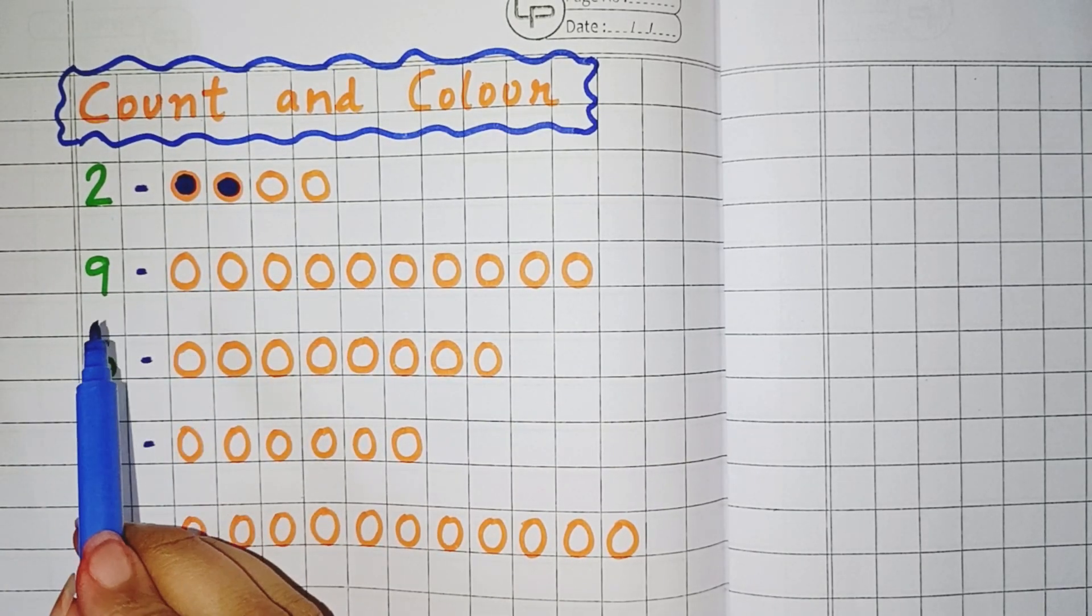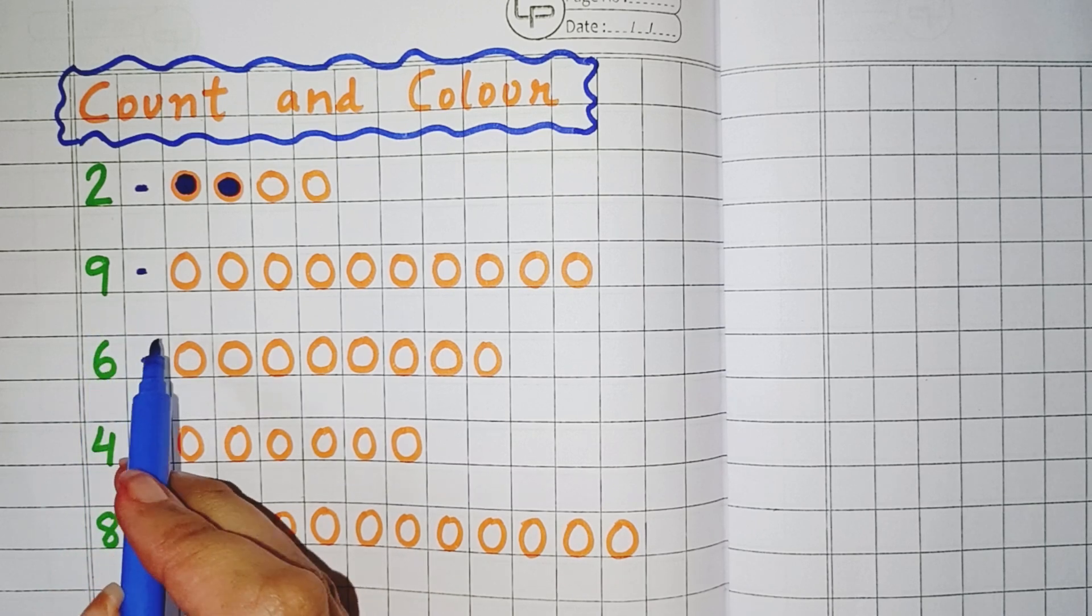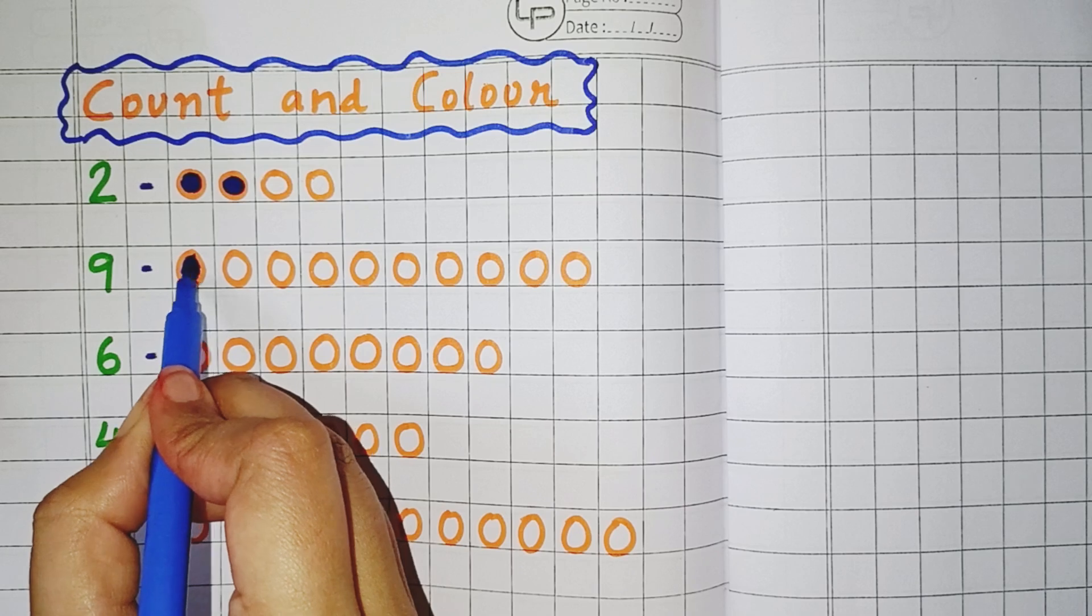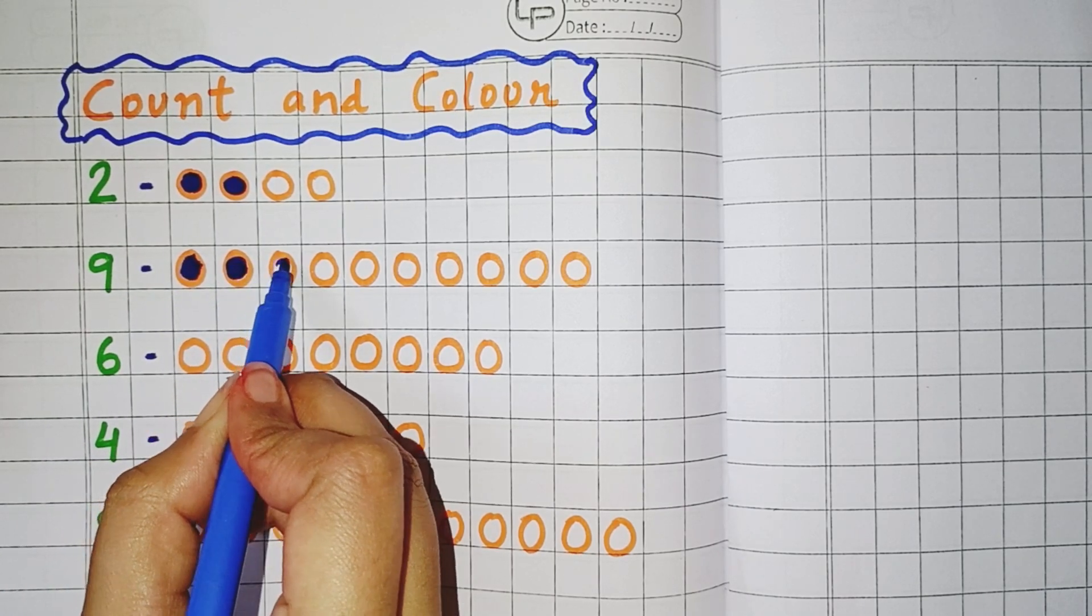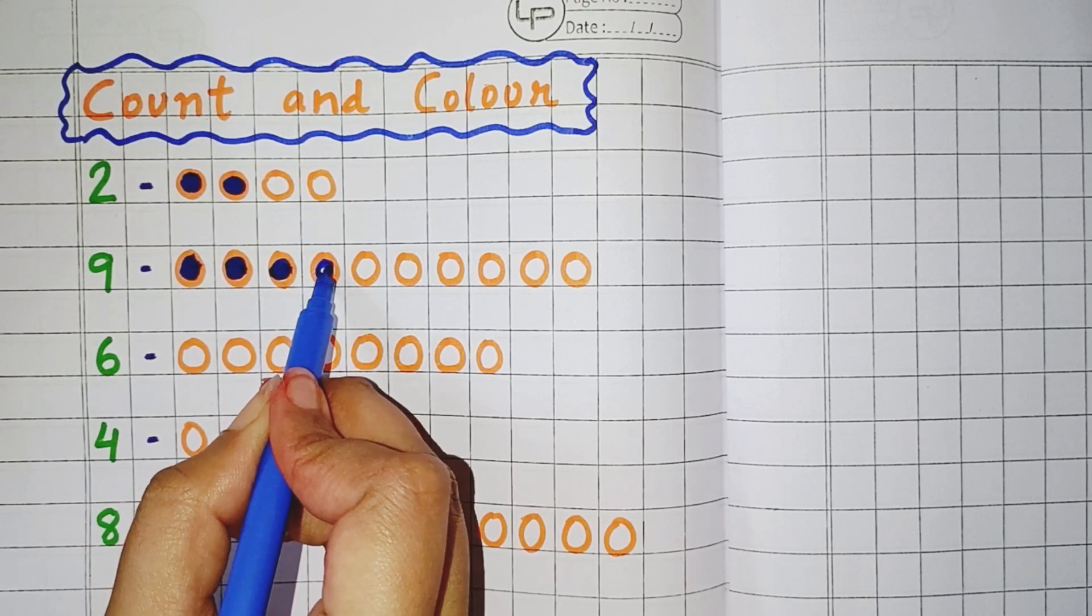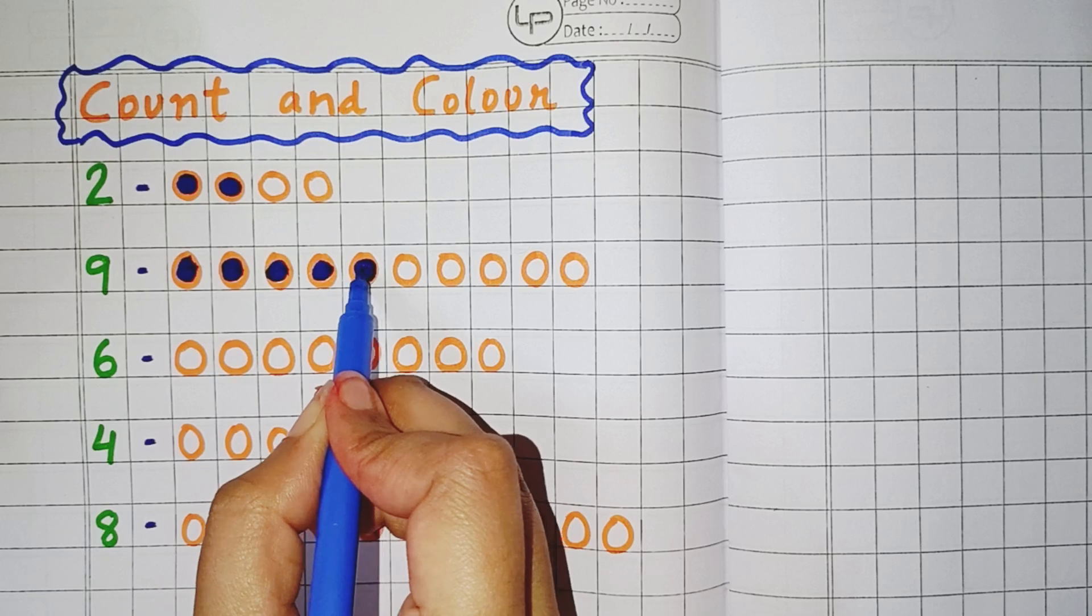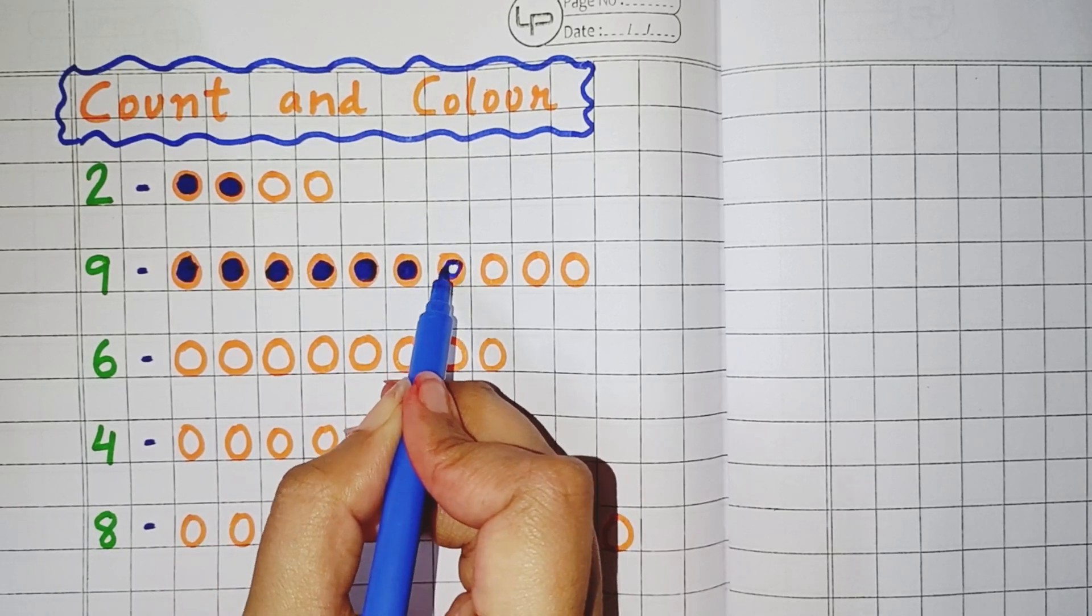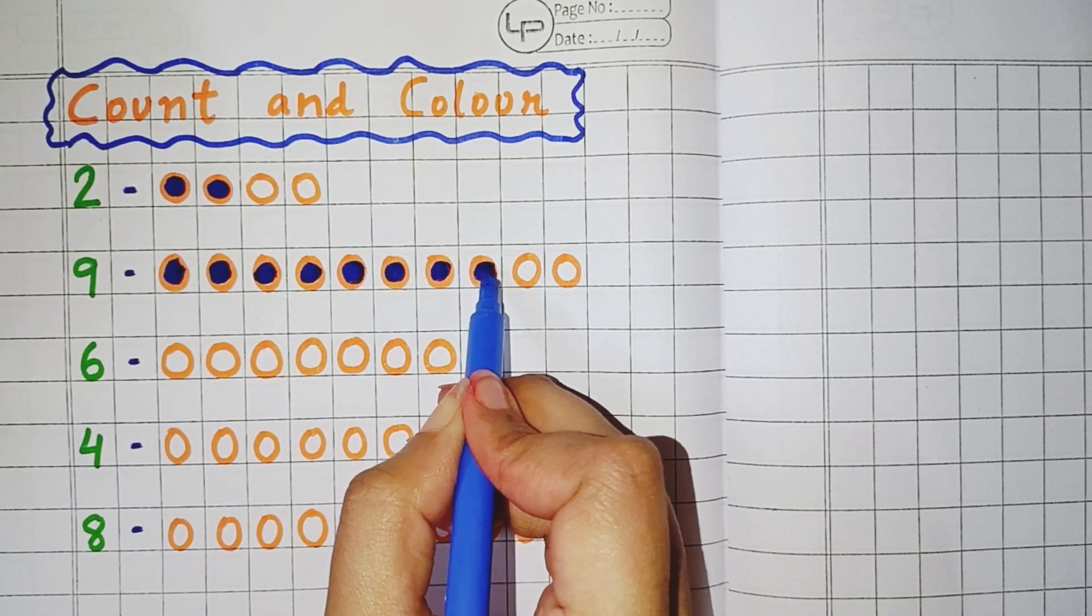Now the next number you can see is 9. So you have to count and color 9 objects. 1, 2, 3, 4, 5, 6, 7, 8, 9.